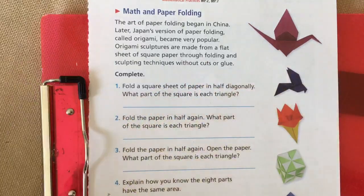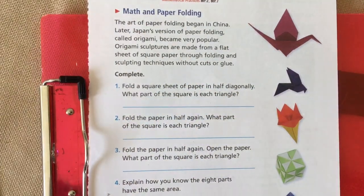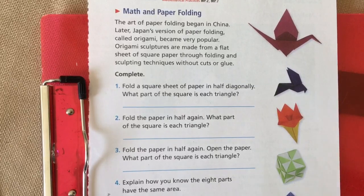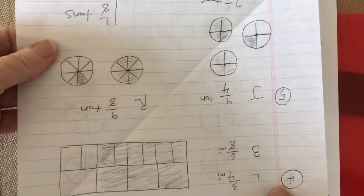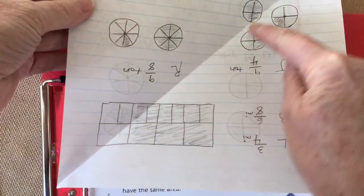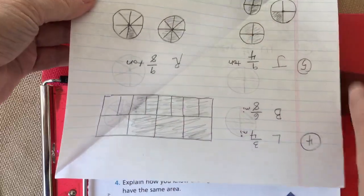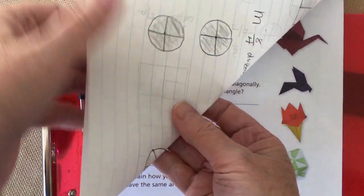Basically, we're just going to be folding square paper. Now there's some vocabulary in here. There's the word diagonal. We've talked about the word diagonal.